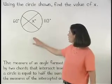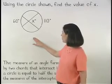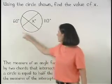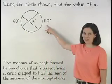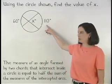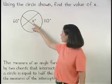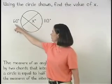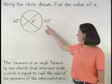And in the diagram shown, since the measures of the intercepted arcs are 60 and 110 degrees, we can set up the equation x equals one half times 60 plus 110.